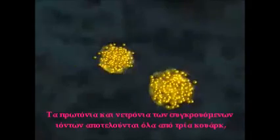The protons and neutrons in the colliding ions are each made of three quarks, held together by force carrier particles called gluons.